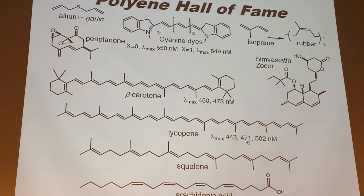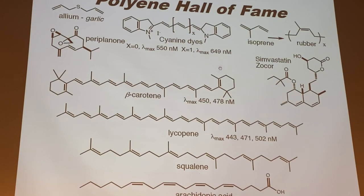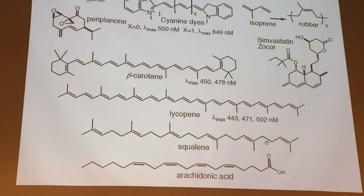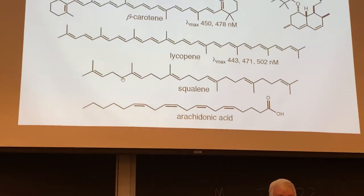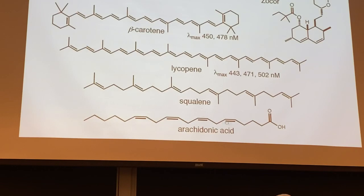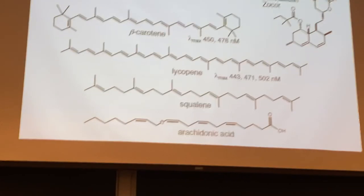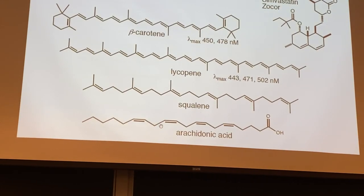Squalene is an isolated polyene — you can see the intervening sp3 saturated carbons, so the double bonds are not conjugated. Arachidonic acid from biology is also an isolated polyene because of the intervening sp3 CH2 groups. The lambda max values for lycopene and carotene come from UV spectroscopy, and the colors we see are the unabsorbed wavelengths.